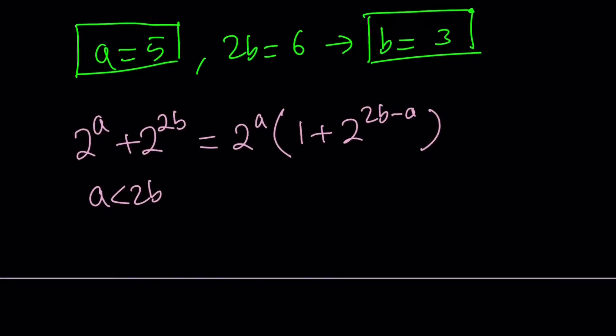So now this is equal to 96. So let's look at some options. 2 to the a is a power of 2, and this is 1 more than a power of 2. So we're going to factor 96, and let's start with 1. What if a equals 0? So we get 1, and this becomes 96. But 96 is not 1 more than a power of 2. So we're going to discard it.